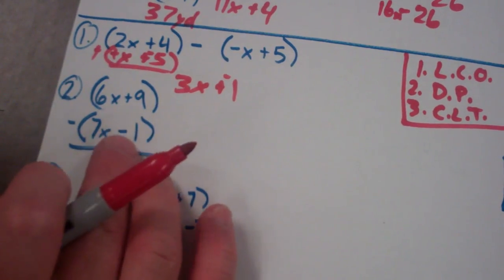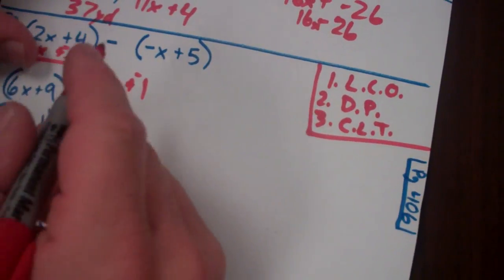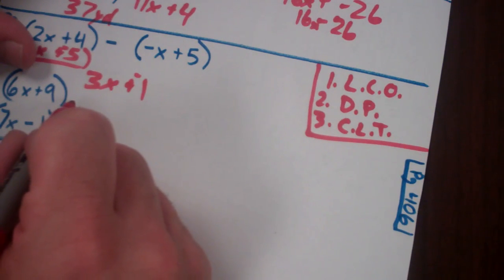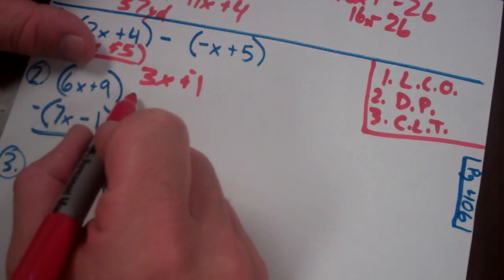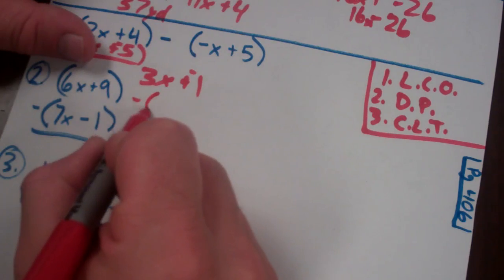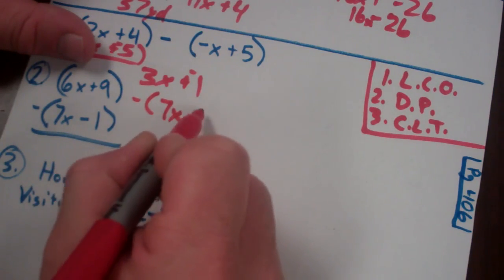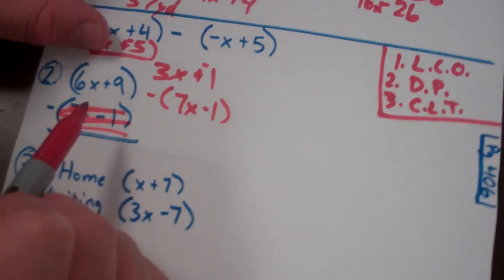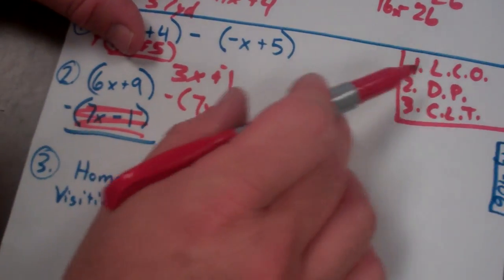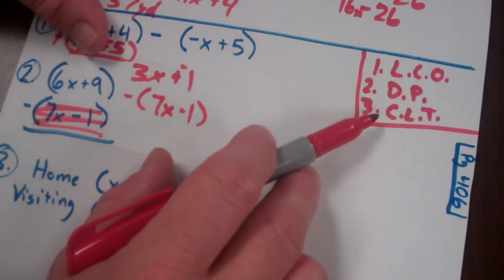Alright. I guess that's the way I did this one. So let me do this one the other way. 6x plus 9, quantity 6x plus 9, minus the quantity 7x minus 1. And I will do this now with the distributive property with my three steps, leave change opposite, distributive property, combine like terms.